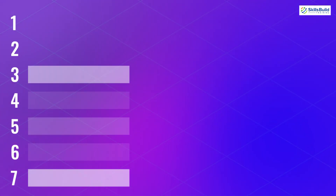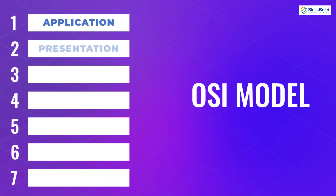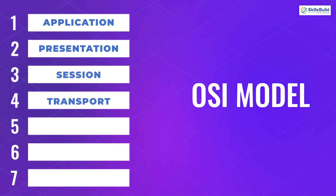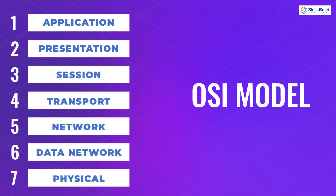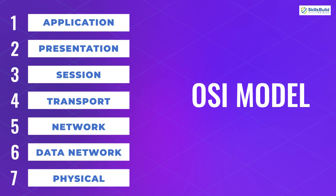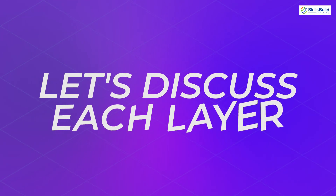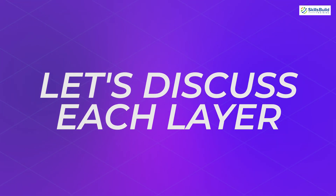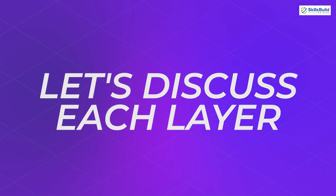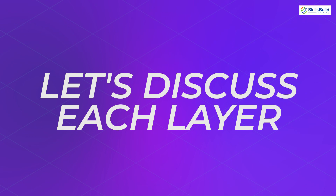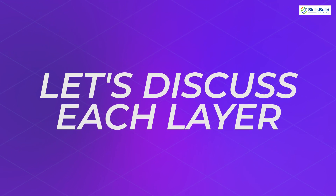That was a brief explanation of each layer of the OSI model. One thing which is really important to understand here is that the output of one layer acts as an input for the next layer. Now let's go into more detail about what each layer does and what their responsibilities are, to better understand the working of the OSI model.